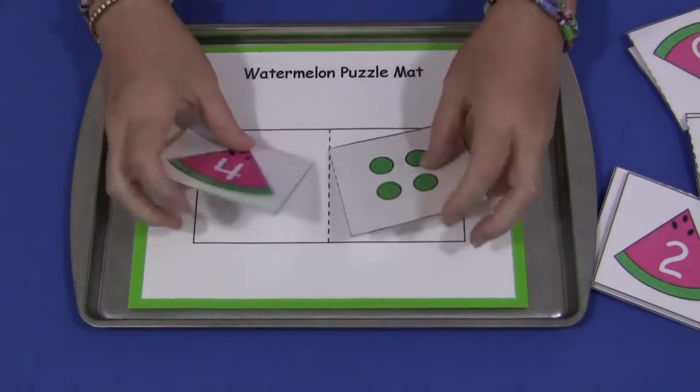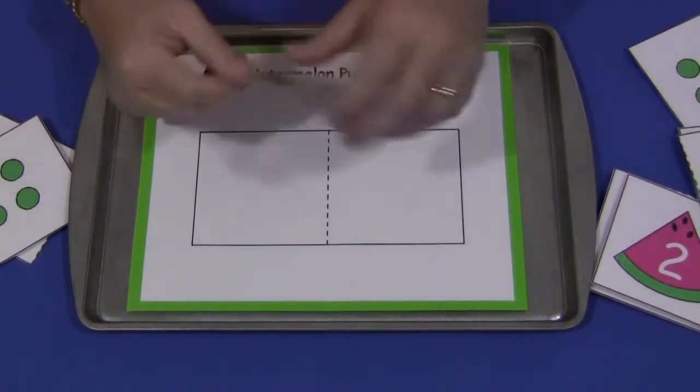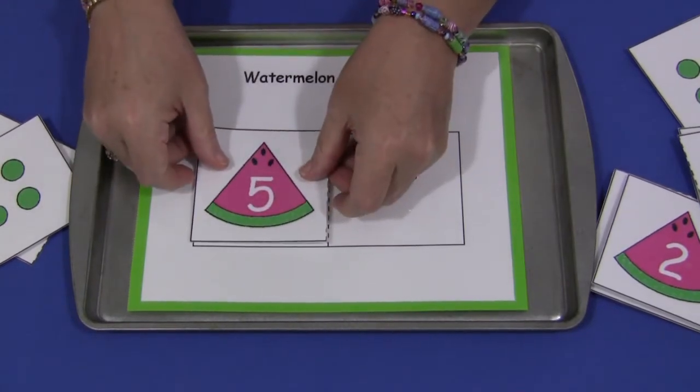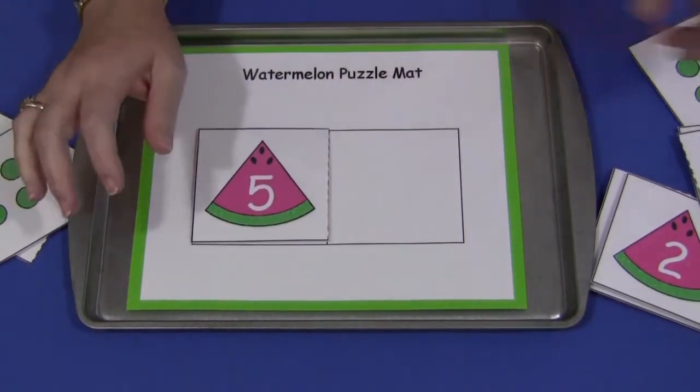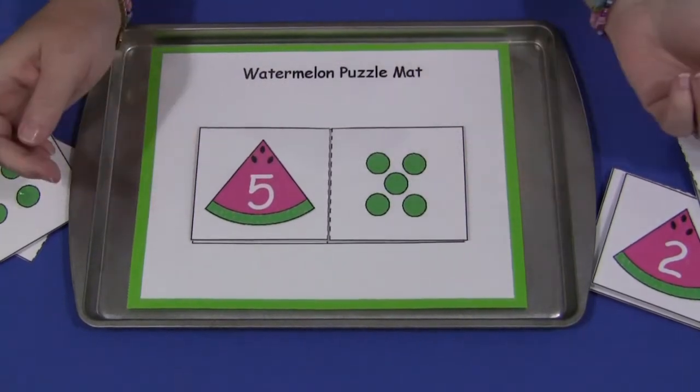And then once they're done they would take those off and then set them aside. And then they would put down another number and then they would find the matching, this one's a number dot, matching number dots and set that on their puzzle mat like so.